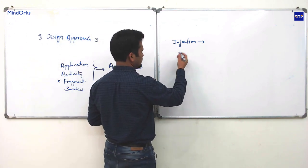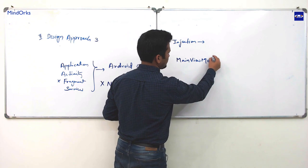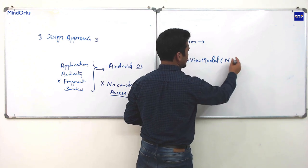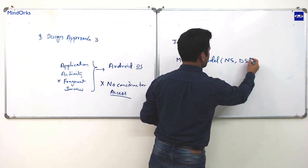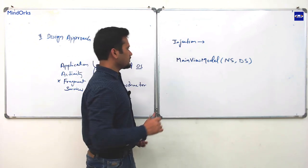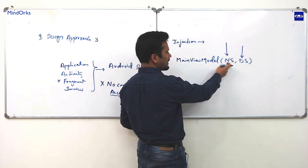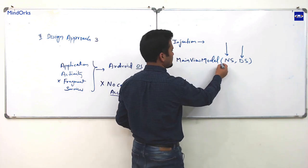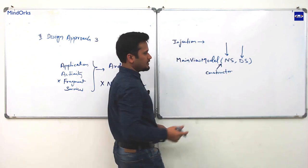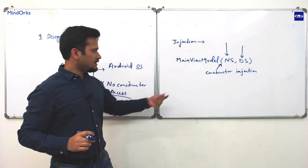Injection simply means providing a dependency from outside. For example, MainViewModel's constructor takes NetworkService and DatabaseService — you are providing these from outside through the constructor. This is called constructor injection: 'constructor' because you're passing in the constructor, and 'injection' means you are providing it.